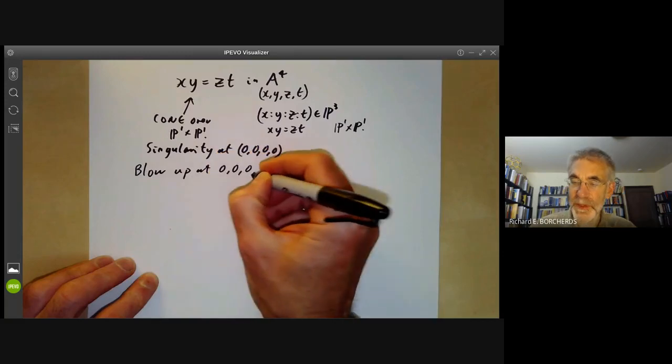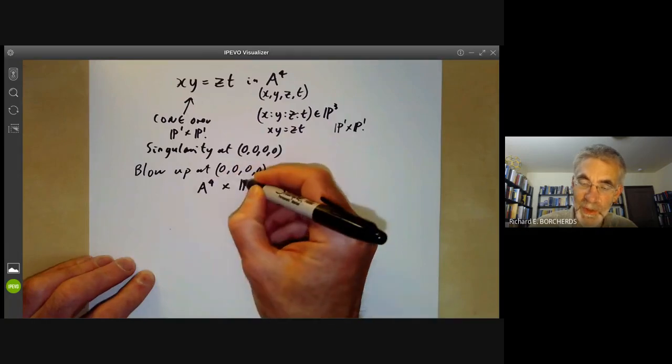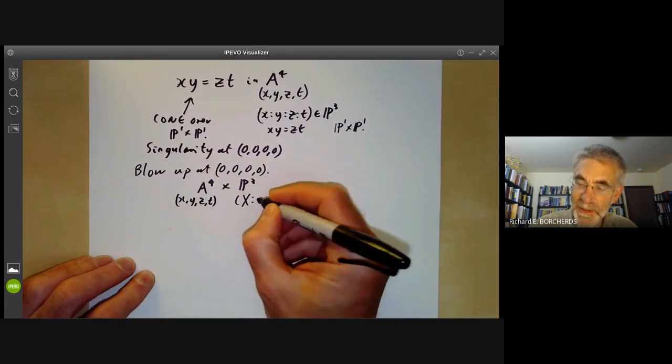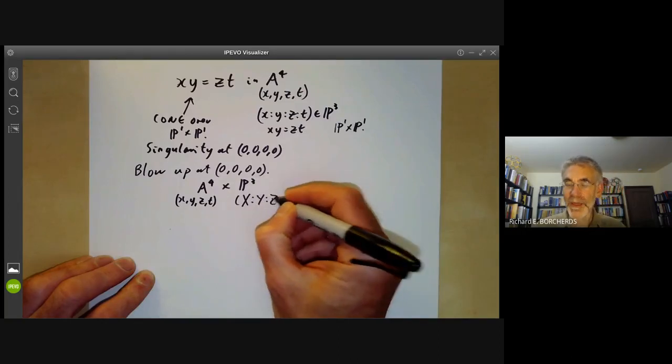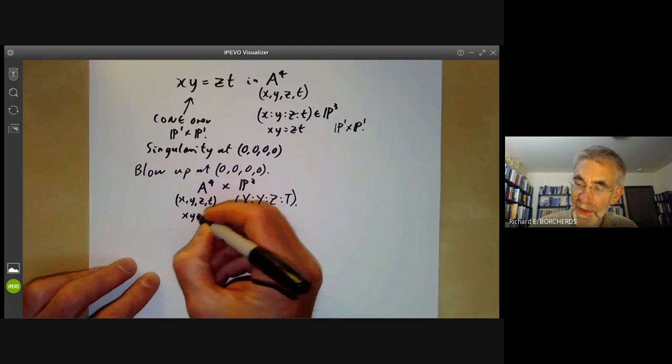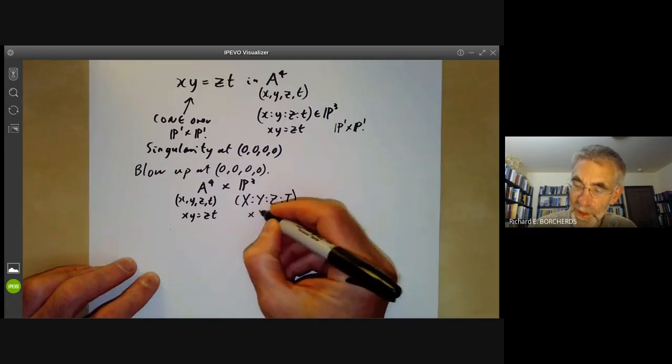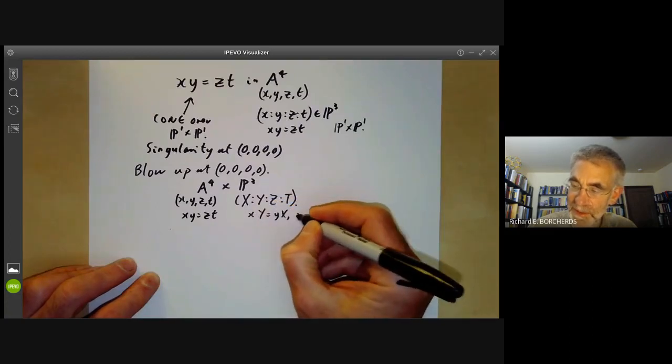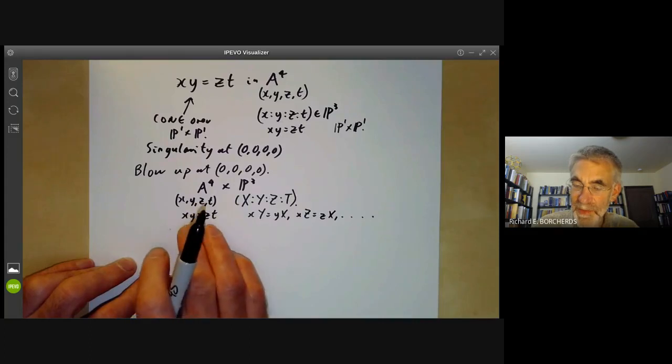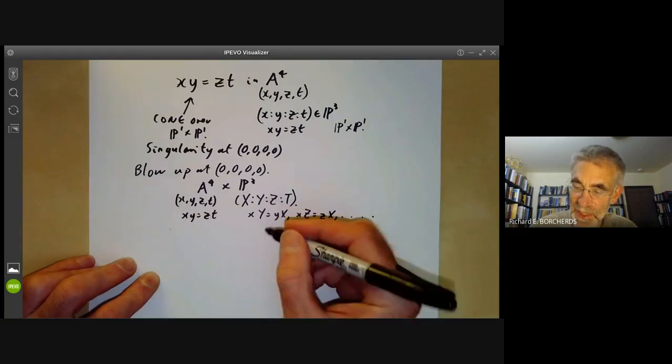To do this we look at A4 times P3. The coordinates for A4 are x, y, z, t, and the coordinates for P3, let's use capital letters X, Y, Z, T. The equations satisfied by the resolution: first we have xy = zt, and then we have a whole lot of equations relating these, like xY = yX, xZ = zX, and so on. We take the image of the non-zero points in A4 under this map and take the Zariski closure, so we also end up with the equation XY = ZT.